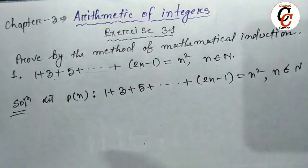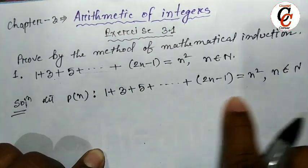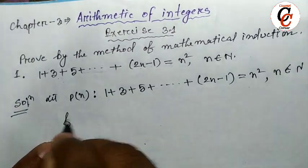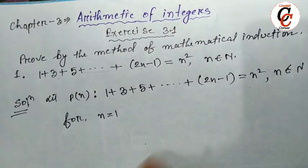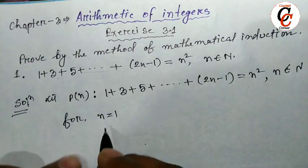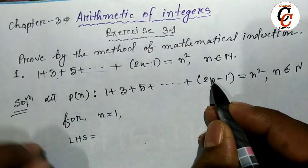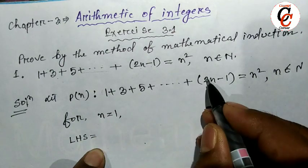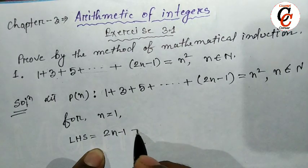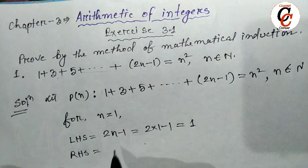In the mathematical induction process, first of all we will check the given statement for n equal to 1. For n equal to 1, we will see whether the left hand side and right hand side are equal or not. For n equal to 1, the left hand side — the common term is (2n minus 1) — so we put n equal to 1: that gives 2 into 1 minus 1, which equals 1.